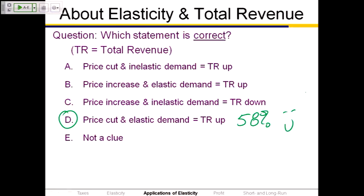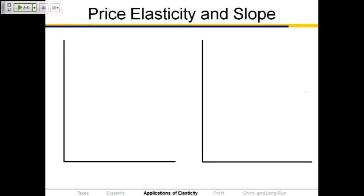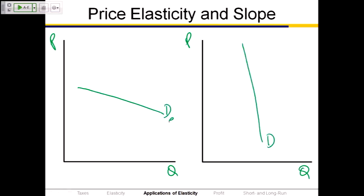Let's look at some applications of price elasticity and slope. Draw yourself a relatively flat demand curve on the left — label it D-elastic — and a relatively steep demand curve on the right. A flat demand curve reflects relatively elastic demand: even a small percentage change in price gives a big percentage change in quantity demanded. A steep demand curve reflects relatively inelastic demand: even a big percentage change in price gives only a small percentage change in quantity. Flat equals elastic; steep equals inelastic.